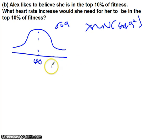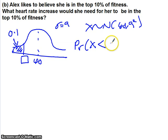In order to be in the top 10%, she actually needs to be down here. Because in this case, top 10% of fitness means you have a low heart rate or a low increase in heart rate. So that needs to be 0.1 and we need to do an inverse normal to try and find out what that value is. The problem we're trying to solve is the probability that X is less than or equal to x1, which we call this x1, is equal to 0.1. We're going to work backwards and find out what it is.